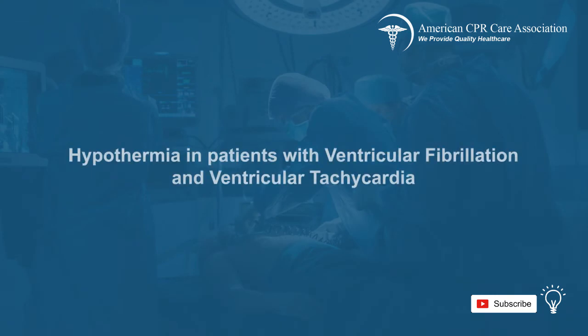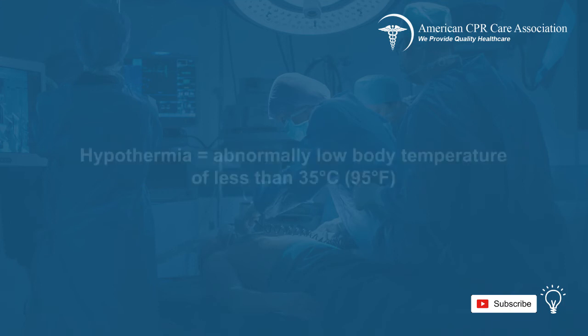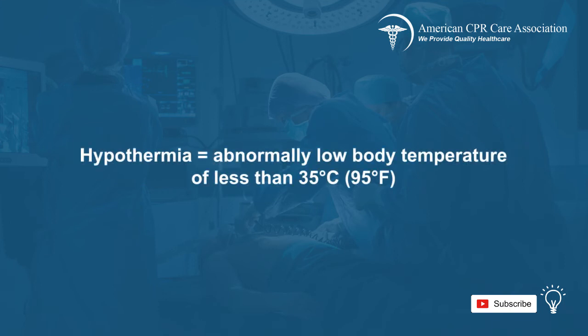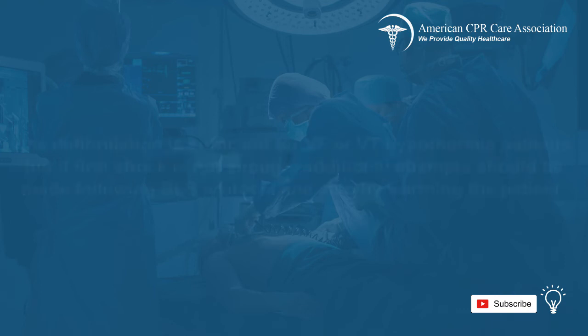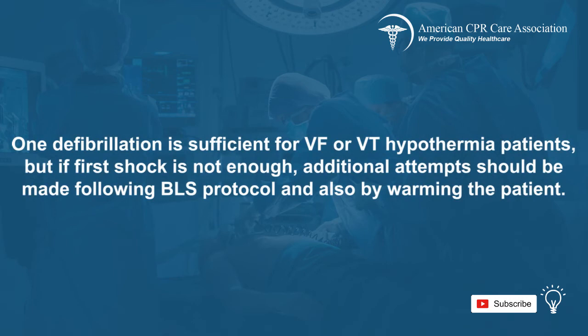Finally, let's look at the treatment of ventricular fibrillation and ventricular tachycardia in patients with hypothermia. Hypothermia is an abnormally low body temperature of less than 35 degrees Celsius or 95 degrees Fahrenheit. For patients with VF or VT who have hypothermia, one defibrillation is sufficient. However, if the first shock is not enough, additional attempts should be made by following the BLS protocol and also by warming the patient at the same time.